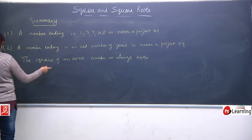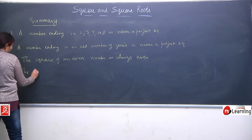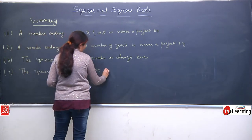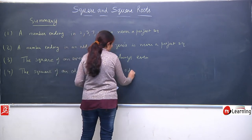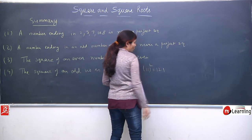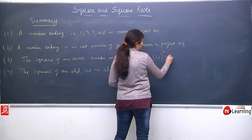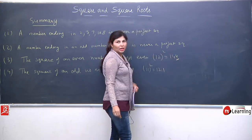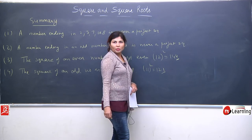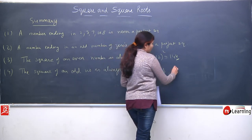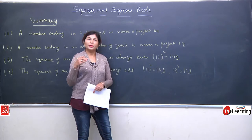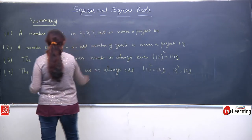Fourth property (almost similar to the third): the square of an odd number is always odd. For example, 11² = 121 (odd), 13² = 169 (odd). Both properties together: even number → even square, odd number → odd square.